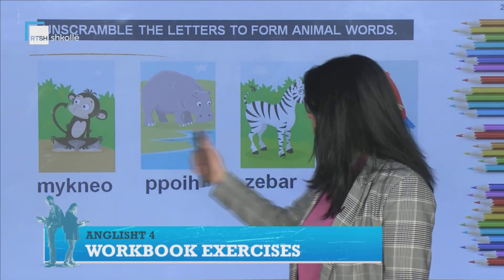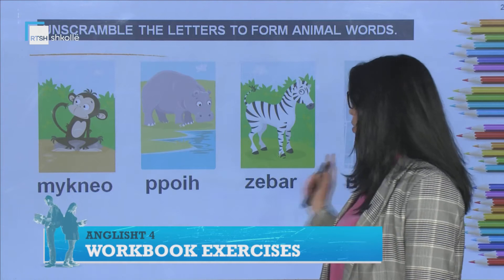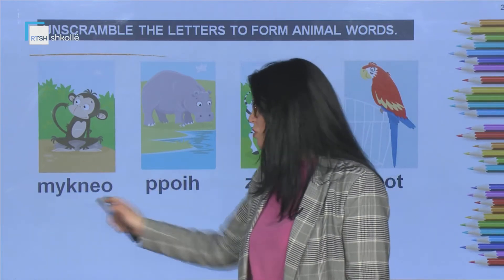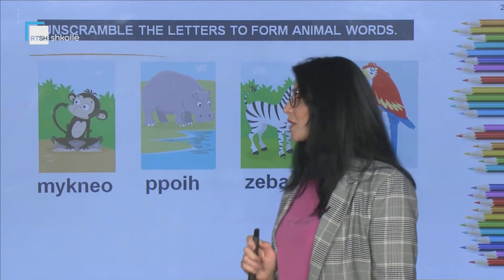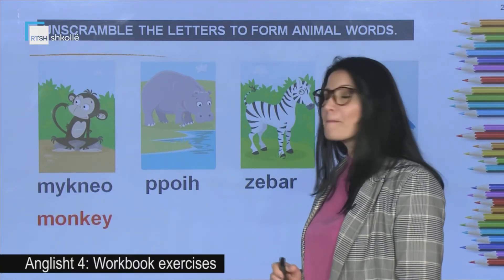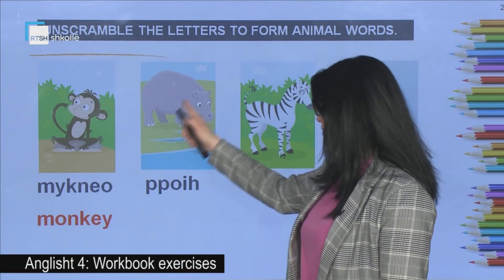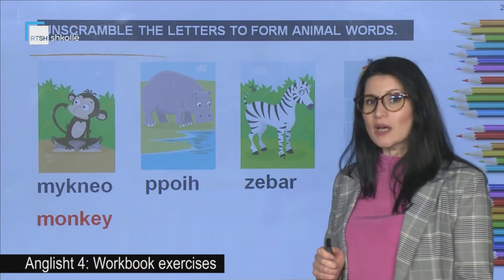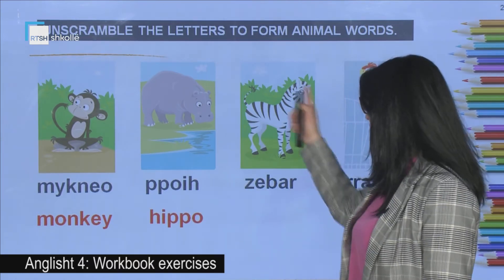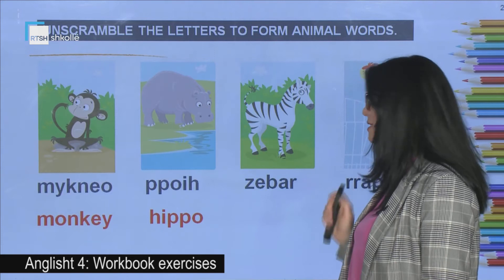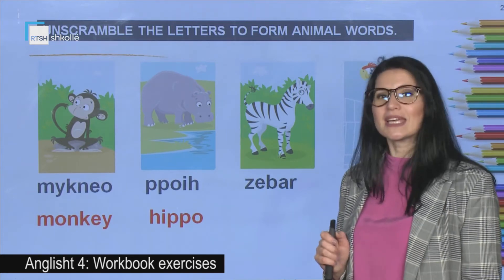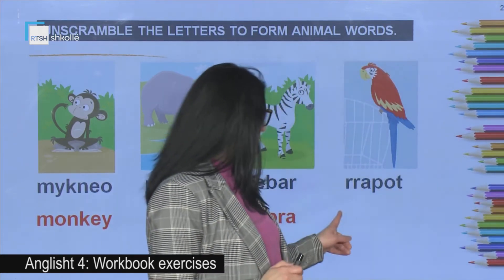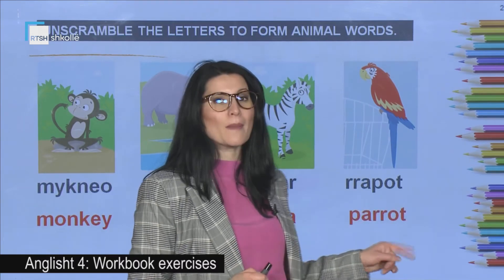Have a look at the pictures. You have got the letters here as well. What is the first word? The first one is monkey. Have a look at the next. We have got here a hippo. What is this one? It's the zebra. And we have another one that is the parrot.